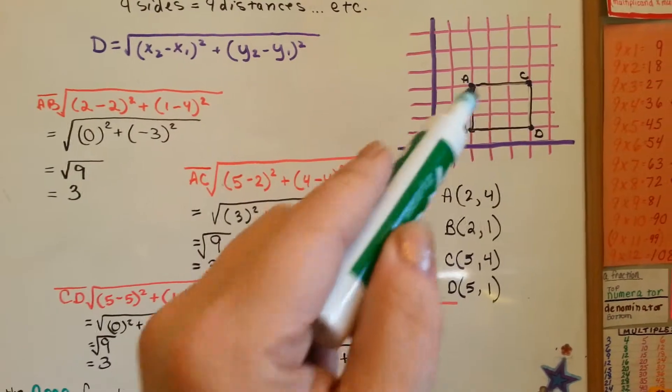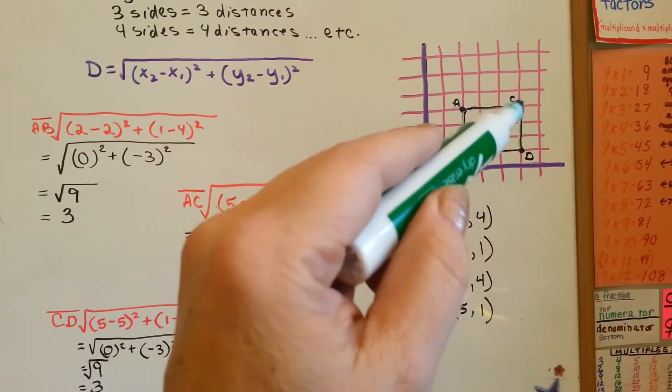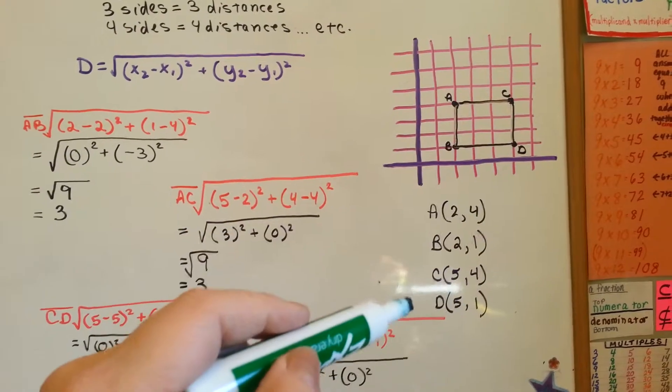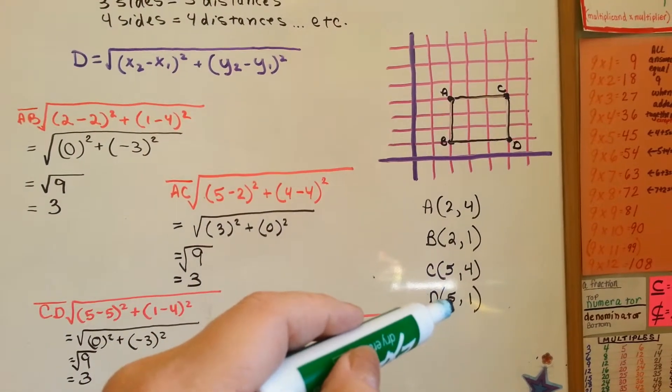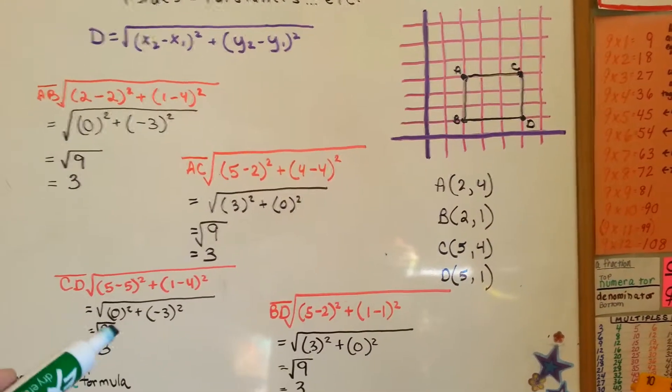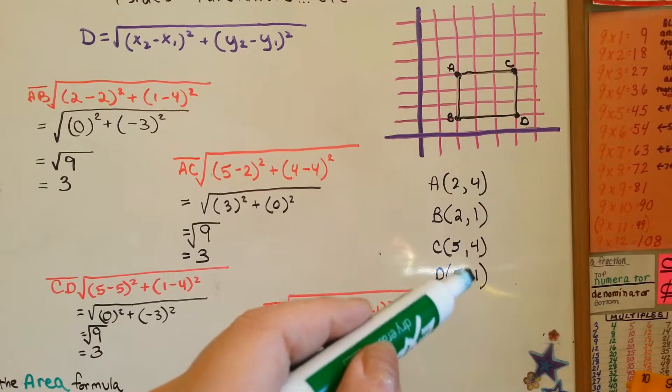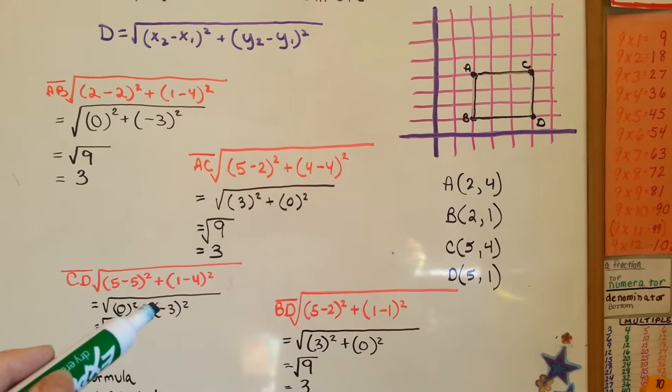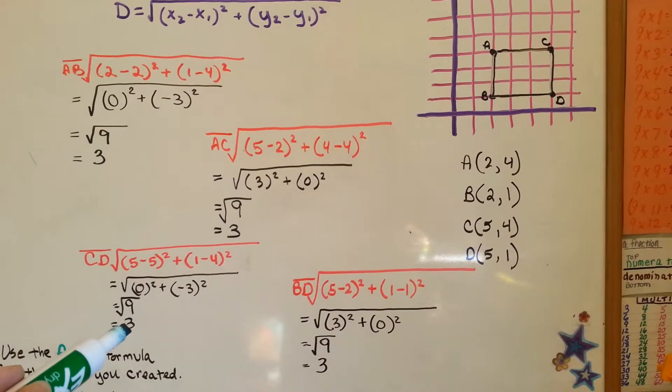Now, we need to do the next line CD. We've done this one, we've done this one. Now, we're going to come down this side with C and D. So, now that's the first ordered pair and that's the second ordered pair. 5 take away 5 is 0, right here. And 1 take away 4, again, is negative 3 which is 9. Square root of 9 is 3.